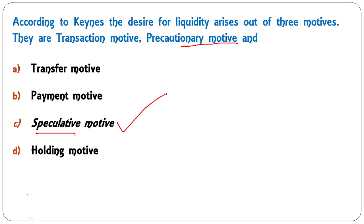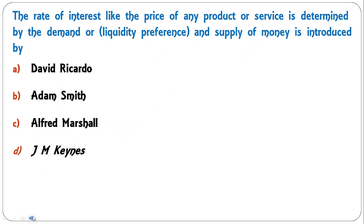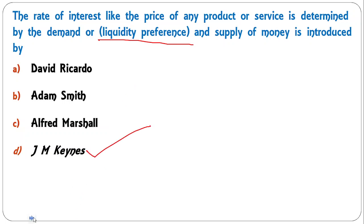The rate of interest, like the price of any product or service, is determined by demand (liquidity preference) and supply of money. This liquidity preference theory was introduced by J.M. Keynes. D is the correct answer.